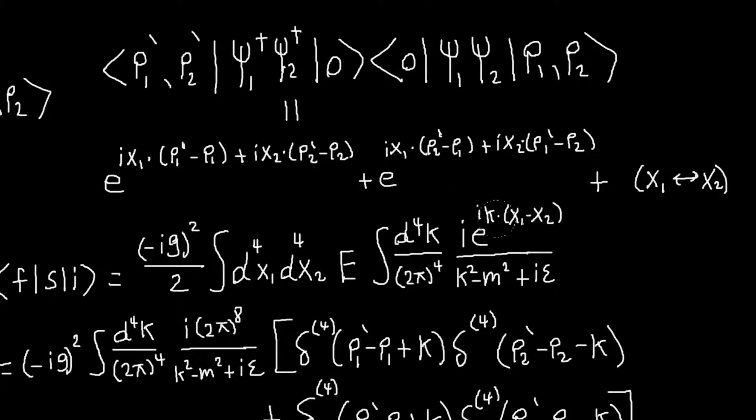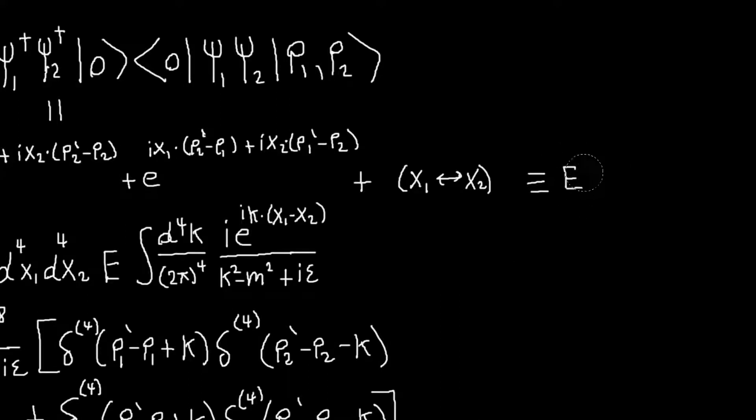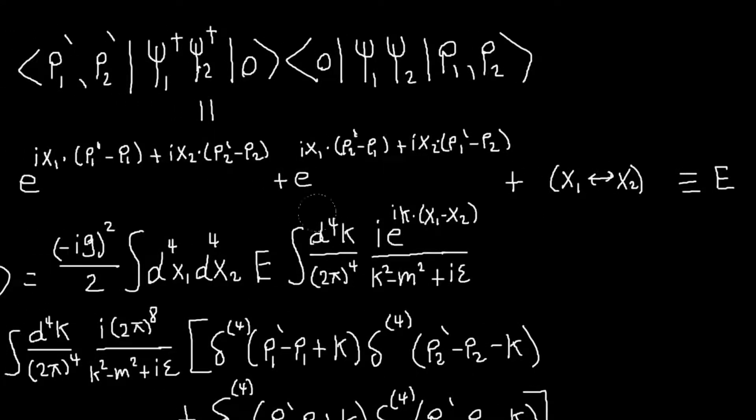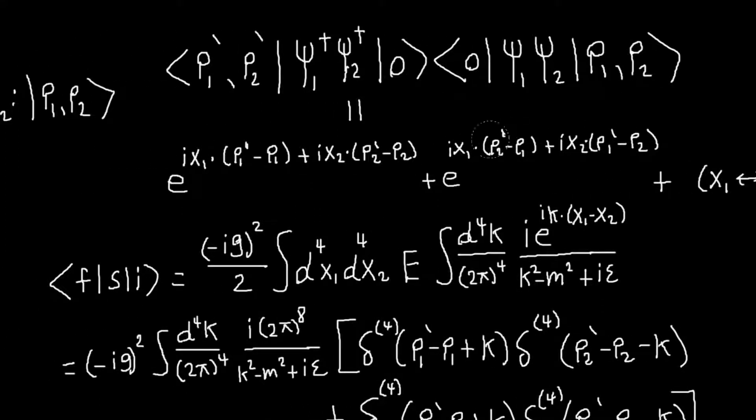And another thing to notice is that since we have this integral over both x1 and x2, and in my expression here, this e thing, these other terms are just the same as the first terms, only with x1 and x2 exchanged, those two terms will give you the same contributions. So they will just double up with what these terms give you, so I can take care of this two, basically.